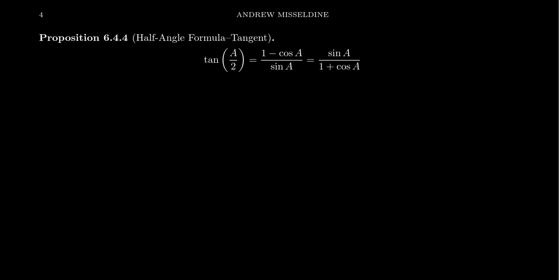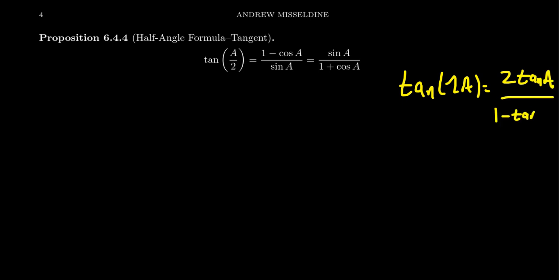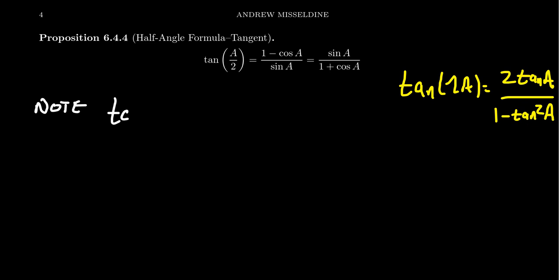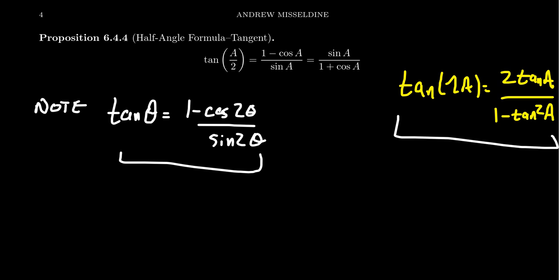Where does this come from? If you recall, there is a double angle identity for tangent — we saw previously that tangent of two a is equal to two tangent of a all over one minus tangent squared of a. We could try to switch the role of the variable as we did for sine and cosine, but that gets a little more messy and complicated. Instead, we note that in a previous video we proved that tangent theta is equal to one minus cosine of two theta over sine of two theta, and it was proven in the same video as the double angle identity for tangent.